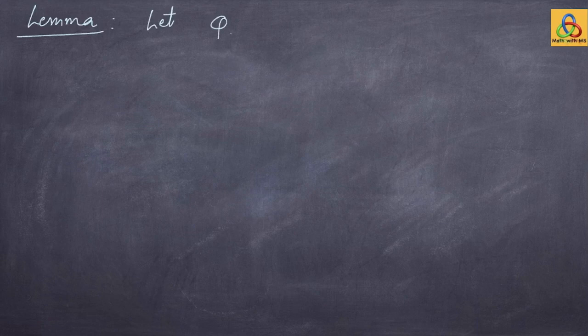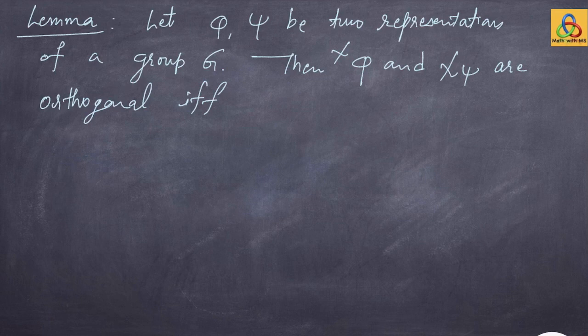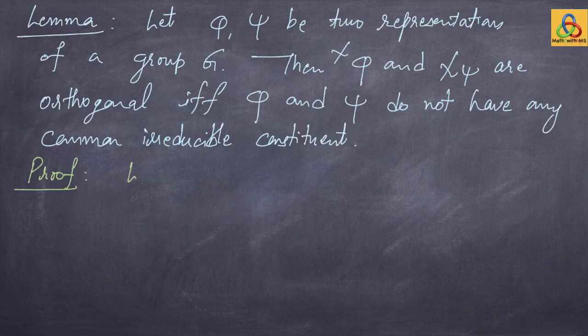Before proceeding further, let us observe the following. Let phi and psi be two representations of a group G. Then the characters chi_phi and chi_psi are orthogonal if and only if the representations phi and psi do not have any common irreducible constituent.